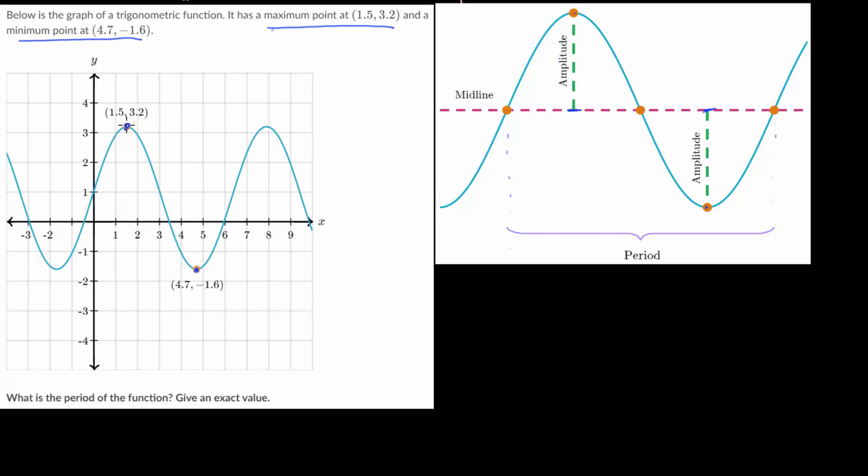Now the period, remember, covers one unique section of the curve. Essentially, if we pick the starting point at, let's say, the maximum, the period will be the distance from one maximum point to the next one. Though we could do the same thing for the minimum values, it could be the distance from one minimum point to its next one. In this case, we aren't told what two maximums or two minimums are, but we are told a maximum and a minimum.